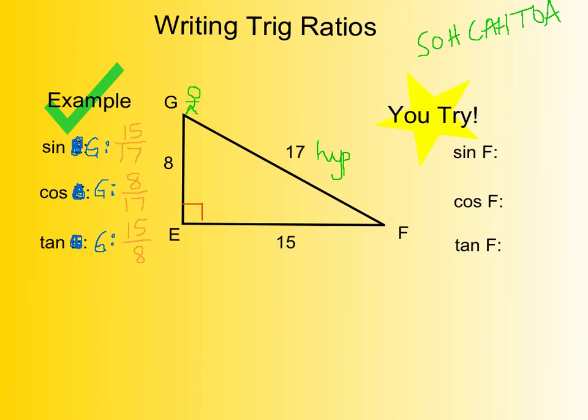Now for the U-try, you're going to be dealing with angle F. My recommendation is that just to get in the habit of it, you draw a little person at F to remind yourself: this is where I'm standing. If I look opposite, what's opposite? If I look next to me, what's adjacent? And where's my hypotenuse?